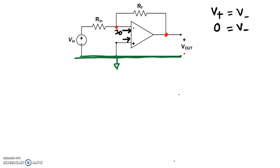So V minus is now zero volts. So this particular node right here is zero volts because of that ideal op-amp property. So now let's take a look at that particular node and apply Kirchhoff's current law to that node.